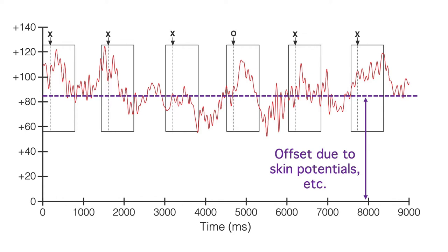If we didn't somehow subtract out the offset, our measures of ERP amplitudes would be incredibly distorted. For example, it might seem as if our P3 peak for the oddball was 115 microvolts, but most of that voltage isn't even coming from the brain.